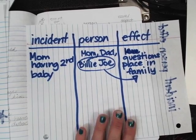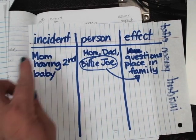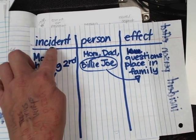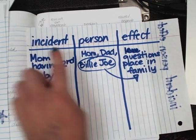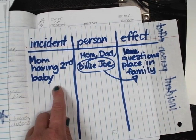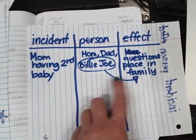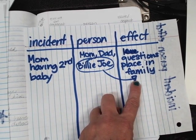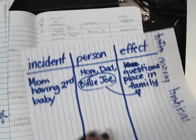Another student tweaked it this way — they did an incident, the person, and the effect, so kind of like cause and effect. The cause would be mom's having the second baby, the person is all of them, but in this case the effect is that Billy Joe kind of questions her place in the family. Both ways are fantastic.